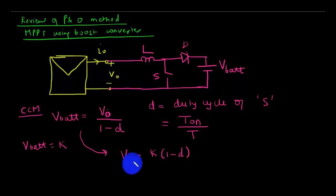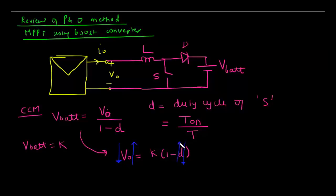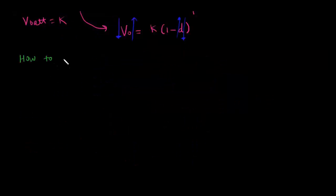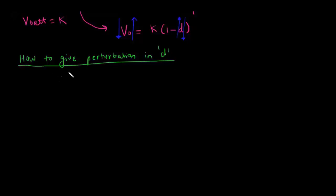So if you want to increase the input voltage, that is the output voltage of the solar panel, you have to decrease the duty cycle. And if you want to decrease the input voltage of the boost converter, you have to increase the duty cycle. By controlling the duty cycle we can give positive or negative perturbation in the solar panel voltage. Next we will look at how to give perturbation in duty cycle D, and for that we need to understand how to generate the switching signal in the boost converter.